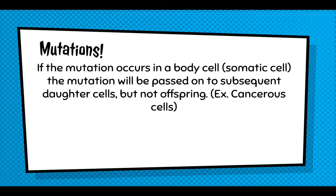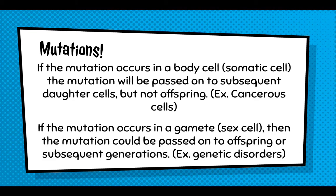If the mutation happens in a body cell or a somatic cell, it will be passed on to subsequent daughter cells through mitosis, but it will not be passed on to offspring. For example, cancerous cells — if an individual has skin cancer when they become pregnant, that skin cancer will not be passed on to their children. If the mutation happens in a gamete or a sex cell, then it can be passed on to offspring through meiosis, and that's what we call genetic disorders.